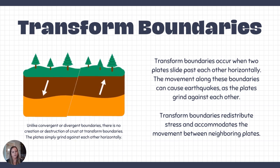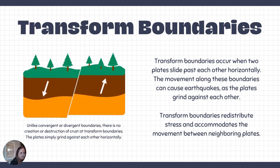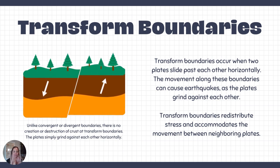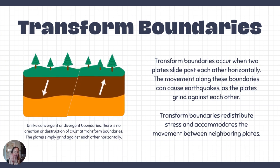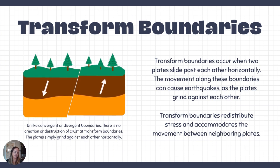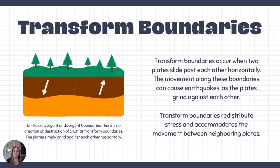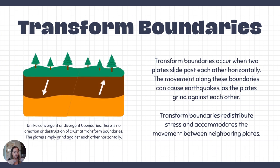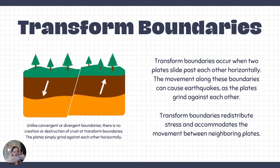Finally, we get to transform plate boundaries. These are when tectonic plates are just bumping shoulders — sliding past each other in a shear motion. Those rocks crumble in the middle as they slide past. Nothing is created or destroyed here except for offset on the surface. Streams and man-made structures can be offset, meaning they are no longer lined up.